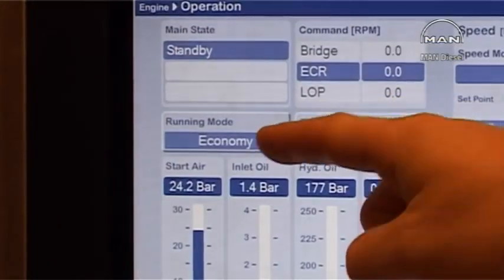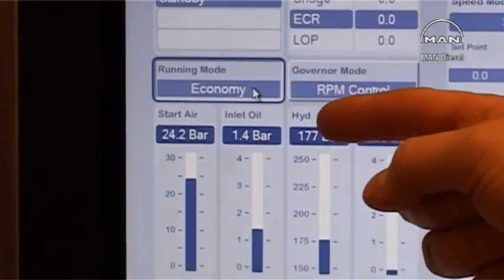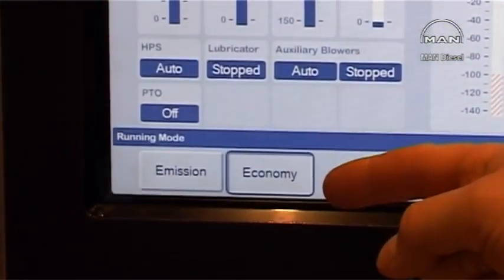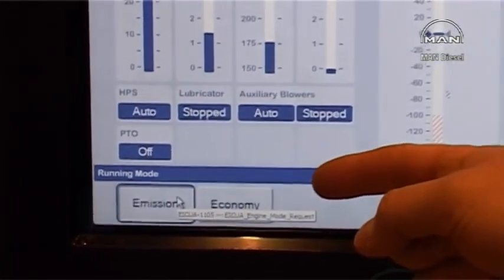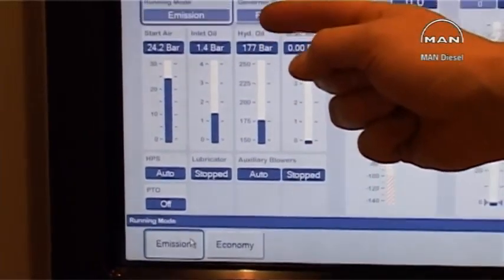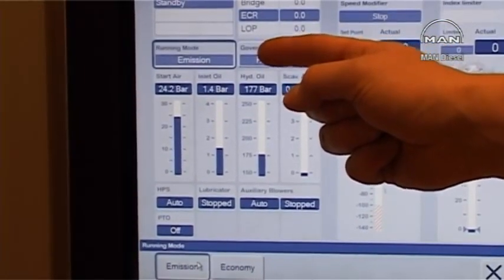System flexibility is obtained by means of different running modes. These are selected either automatically to suit specific operating conditions or manually by the operator to meet specific goals such as low fuel oil consumption or limited exhaust gas emission.